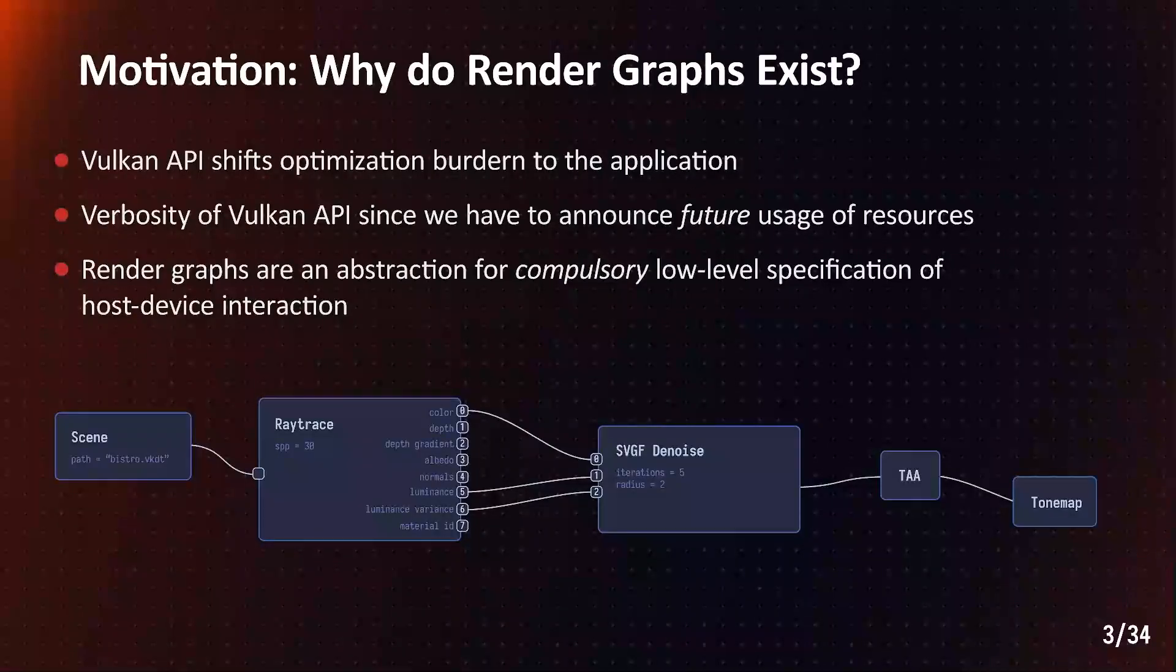Pessimistically, we could say that render graphs have become an industry standard because low-level modern APIs have shifted the optimization burden to the application. One of the reasons for Vulkan's verbosity is that we have to announce future usages of resources to the API. So, render graphs do not only abstract away all the low-level details, but allow inspection of future usages.